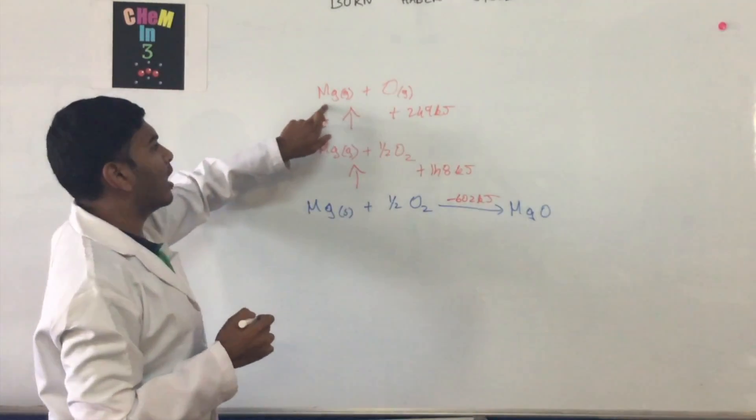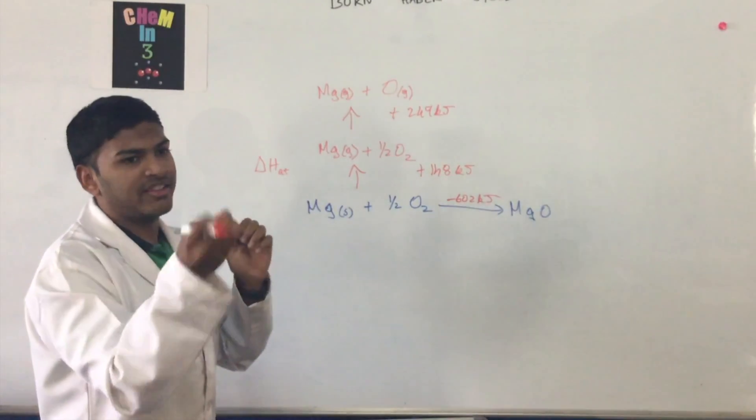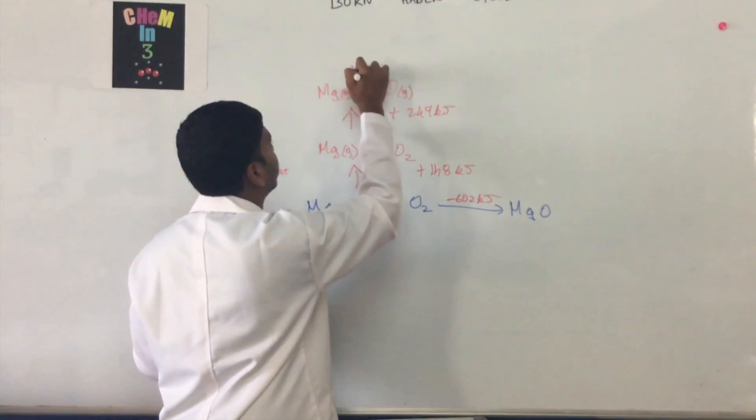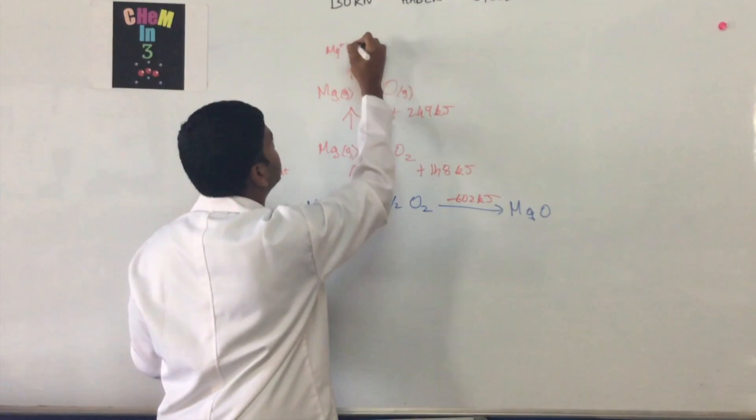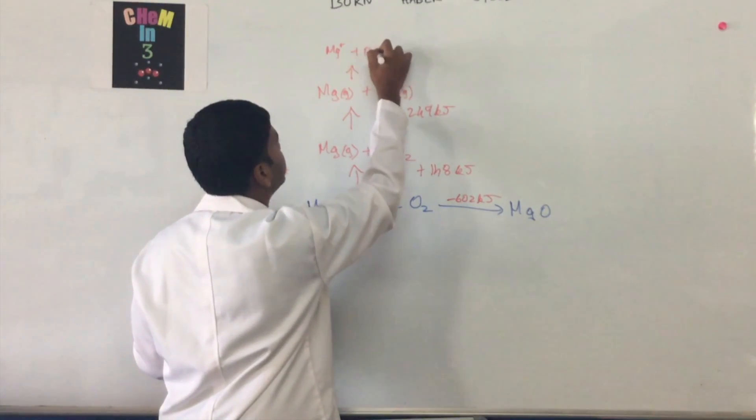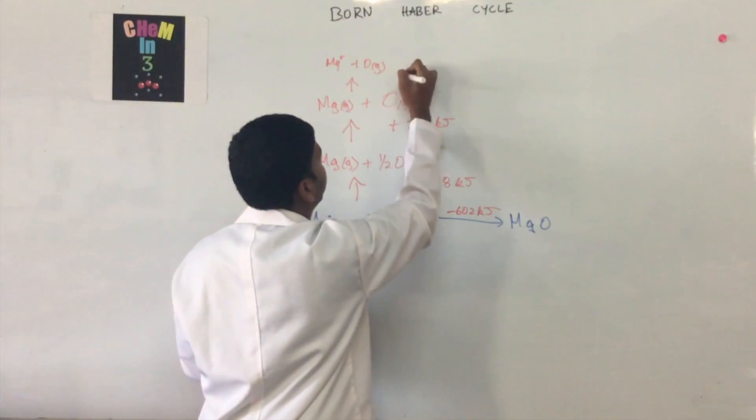Now we have the magnesium atom and the oxygen atom separated, and now it's time to ionize them. So magnesium gets ionized to Mg+ plus O(g), and this is at plus 738 kJ.